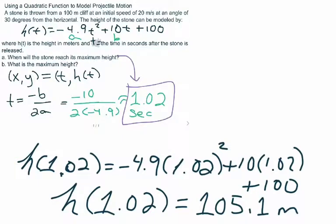This value represents the maximum height of the stone. So that's our answer to part b.